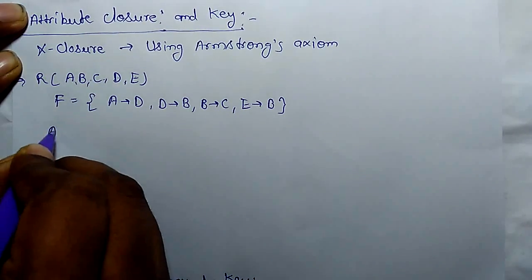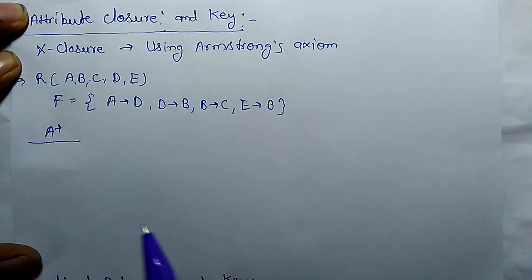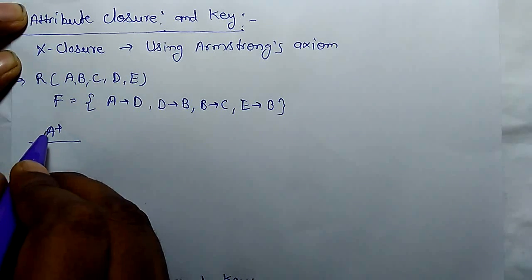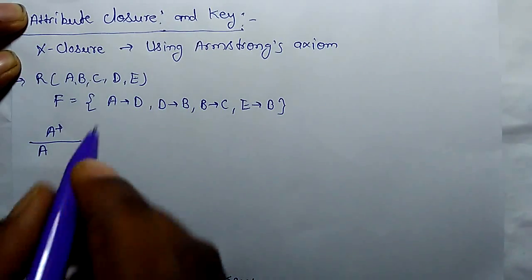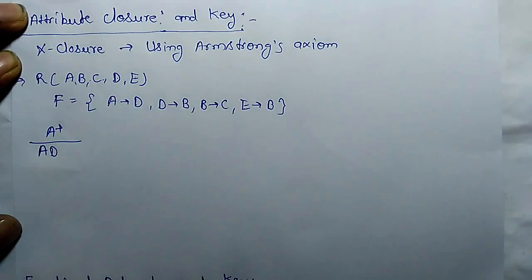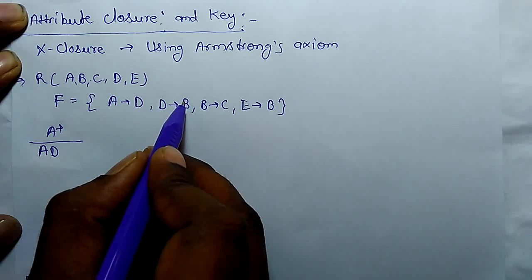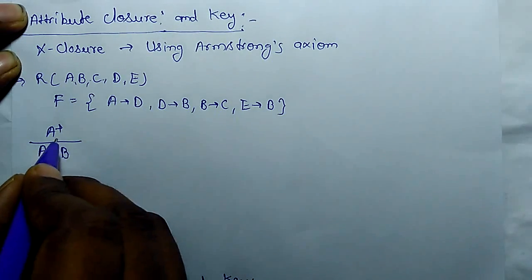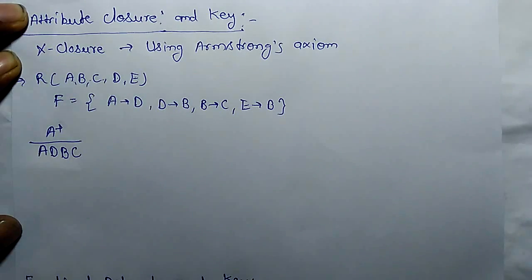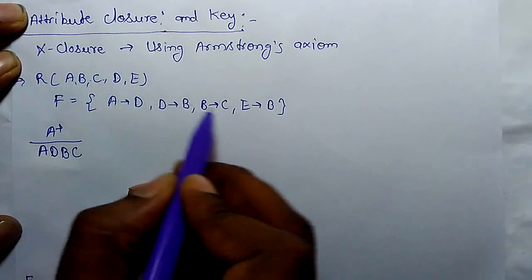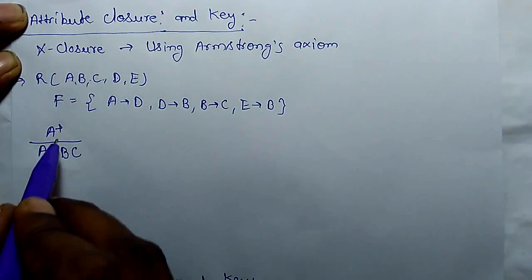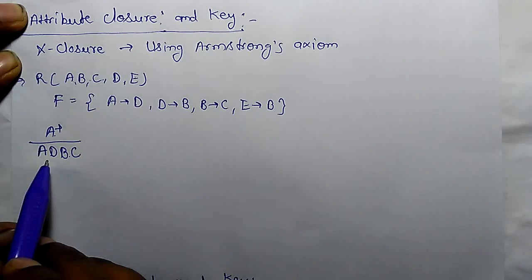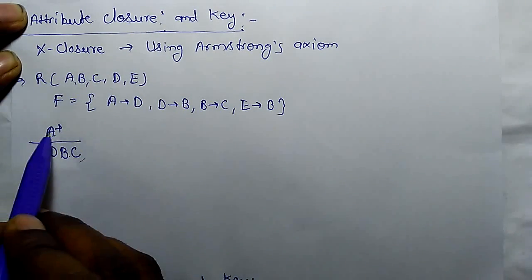So what is the A closure? A closure means all the attributes that can be determined by A. By reflexivity, A determines A itself. A determines D. D determines B, so A can also determine B using transitivity. B determines C, so C is also part of A closure. A closure is {A, D, B, C}. But A closure does not functionally determine all attributes of the relation, so it cannot be a key.